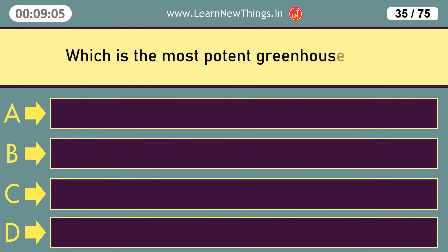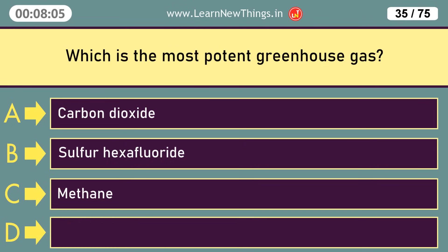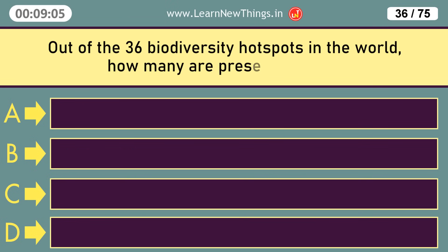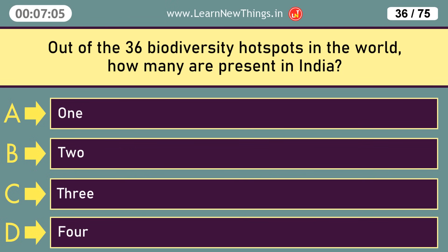Which is the most potent greenhouse gas? Sulfur Hexafluoride. Out of the 36 biodiversity hotspots in the world, how many are present in India? 4.